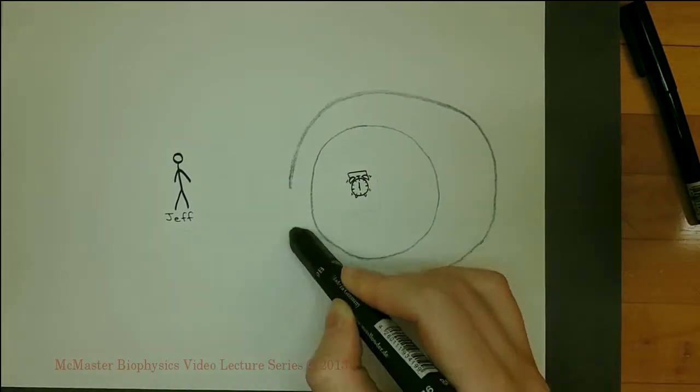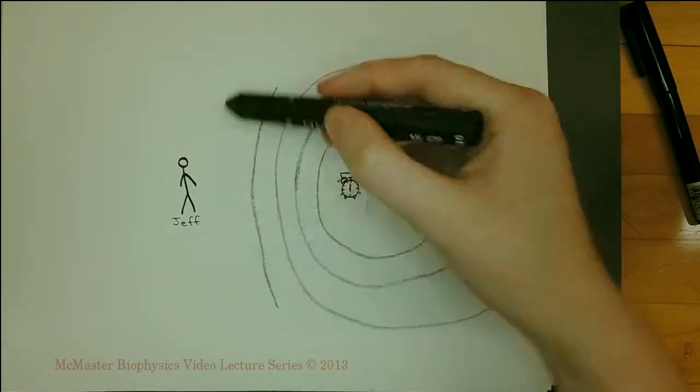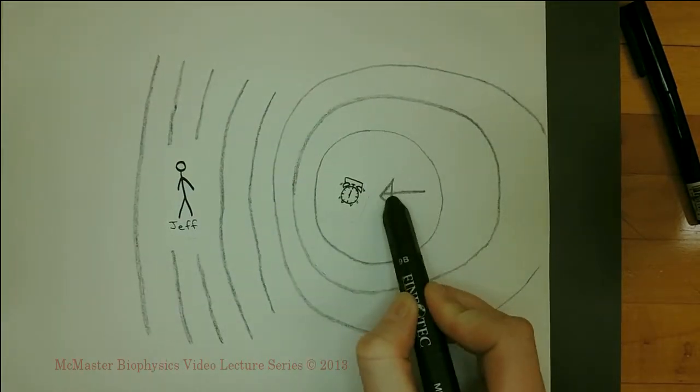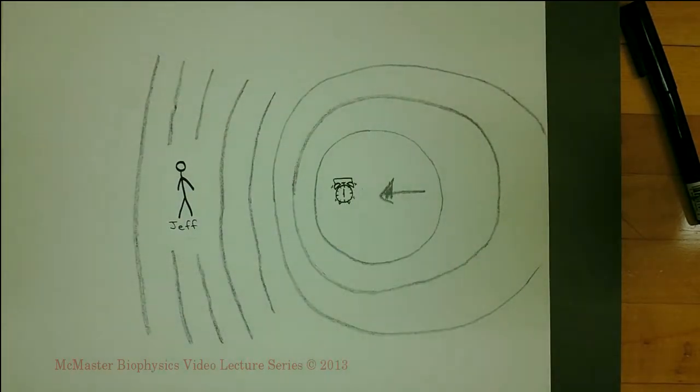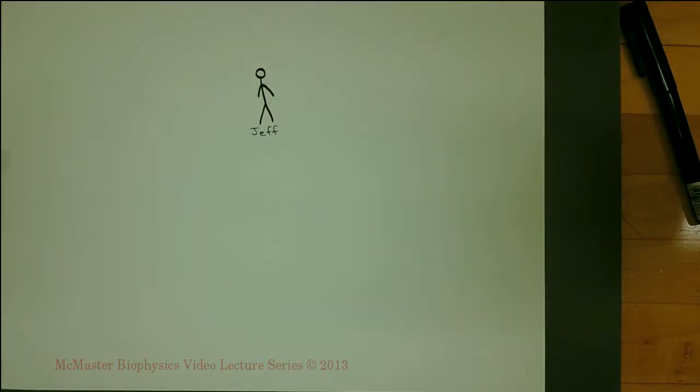If the source moves towards Jeff, the opposite occurs, and the sound appears higher because the areas of expansion and compression are closer together. If Annie drives by Jeff on her motorcycle, the frequency perceived by Jeff is first increased as she moves towards Jeff, then decreased as she drives away.